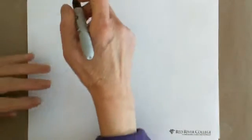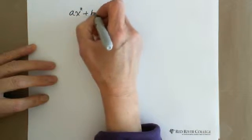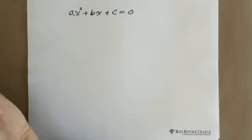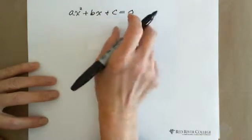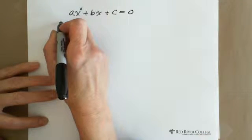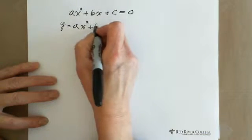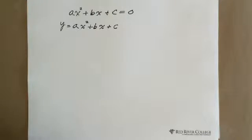In the quadratic equation, the standard form is ax squared plus bx plus c equals zero. On the left side, ax squared plus bx plus c is a quadratic function. So y equals ax squared plus bx plus c is the quadratic function. We're looking for where this function equals zero — what is the x value?